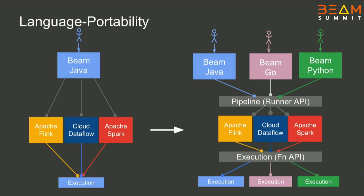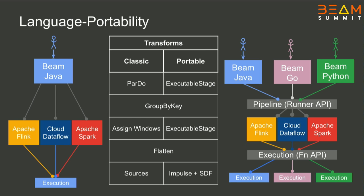The next step is to have an execution layer, which allows us to have a standardized interface for the runners to talk with the language execution part of each SDK. We call that the FN API, because it was so much fun to implement it. We have that in place now, and we are really set up. We came from this kind of Java-centric portability vision to a truly portable way of running Beam pipelines.